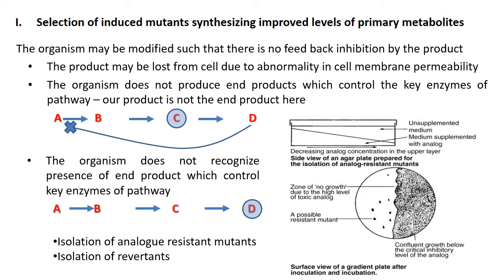This can be achieved by several mechanisms. In the first approach, the product may be lost from the cell due to an abnormality in cell membrane permeability. The cell membrane permeability is altered such that the product which is formed due to the metabolic pathway gets released from the cell as soon as it is synthesized. As a result, the cell will continue synthesizing the product, and the industrial strain will have high productivity of that particular product.